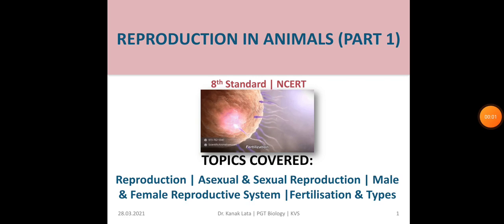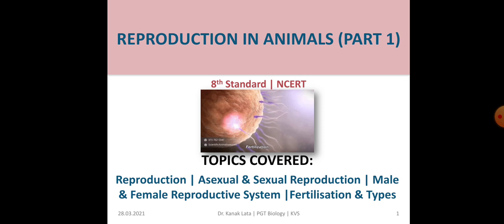Hello friends! Today I am here with Reproduction in Animals, Part 1. Today we are going to discuss Reproduction, Asexual and Sexual Reproduction, Male and Female Reproductive System, and Fertilization and its types. So let us start the session.